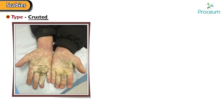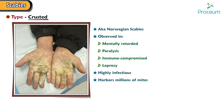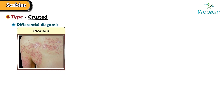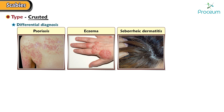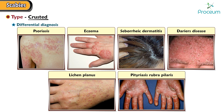Next, crusted scabies, also known as Norwegian scabies. It is observed in mentally impaired, paralyzed, immunocompromised, and leprosy patients. It is a highly infectious condition and harbors millions of mites. It's usually seen over the scalp, face, neck, palms, and soles. Differential diagnosis of crusted scabies include psoriasis, eczema, seborrheic dermatitis, Darier's disease, lichen planus, and pityriasis rubra pilaris.